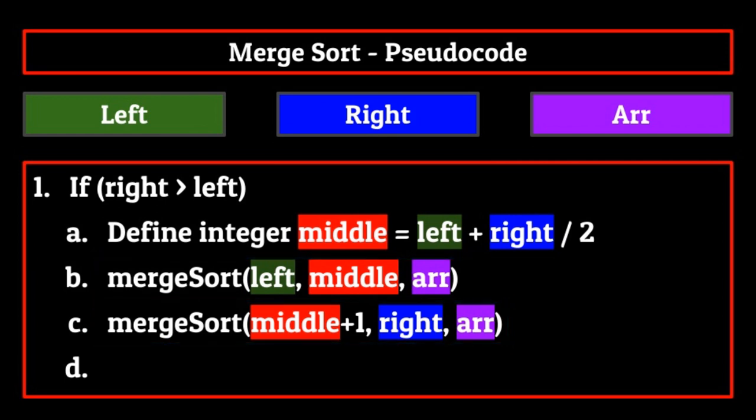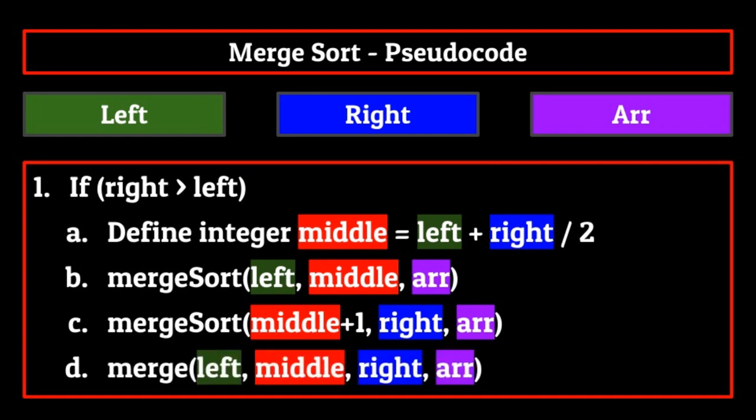These first three steps make up the breakdown phase of our algorithm. We use them to get the list into small enough sub-lists so that we can easily use comparison-based logic to build them back up. Speaking of building up, this is where step D finally comes into play. Step D instructs us to merge the two halves of the list that we sorted in steps B and C. This is actually a separate function outside of the merge sort function, which serves to merge two sorted sub-arrays into a sorted main array.